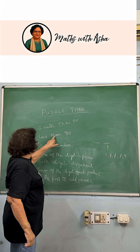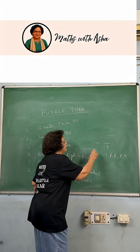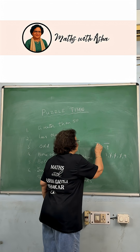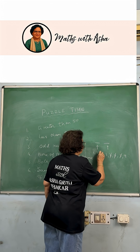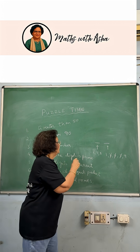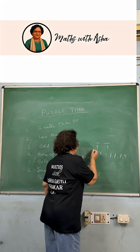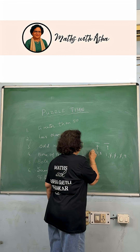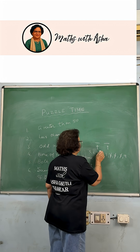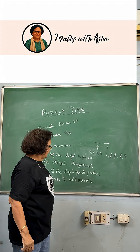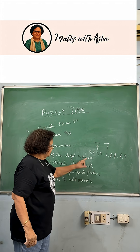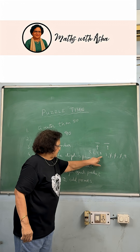Now since the number is between 50 and 90, the tens digit can be 5, 6, 7, or 8.